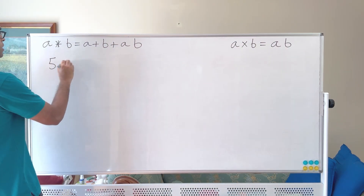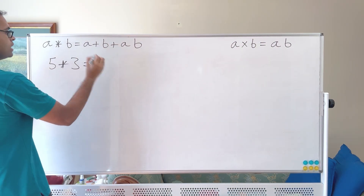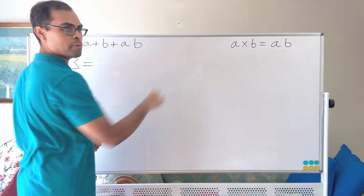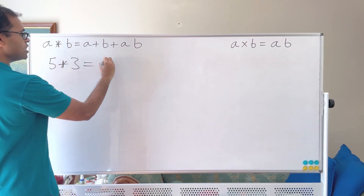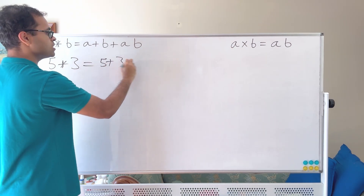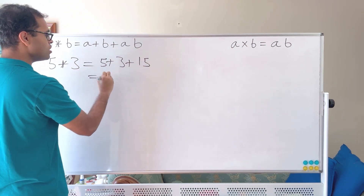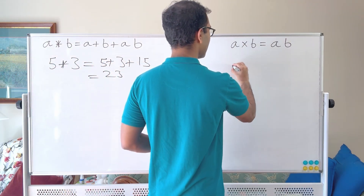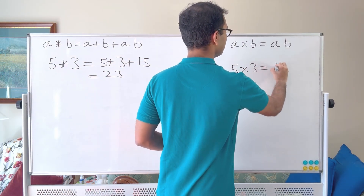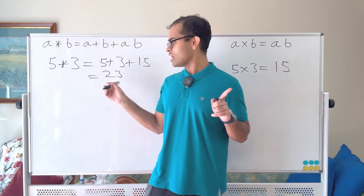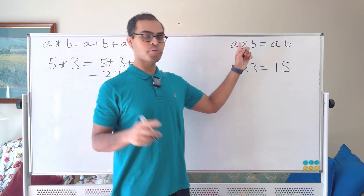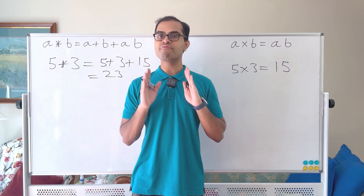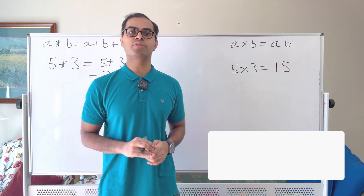To give you a simple example: if you take 5 ★ 3, it combines two numbers and spits out a third, just like multiplication does. So 5 ★ 3 equals 5 plus 3 plus 5 times 3, which equals 23. In the same way, you can multiply 5 and 3 to get 15. Of course 15 and 23 are not the same, but these two operations are the same in disguise, and we're going to illustrate a fundamental subject of mathematical group theory.